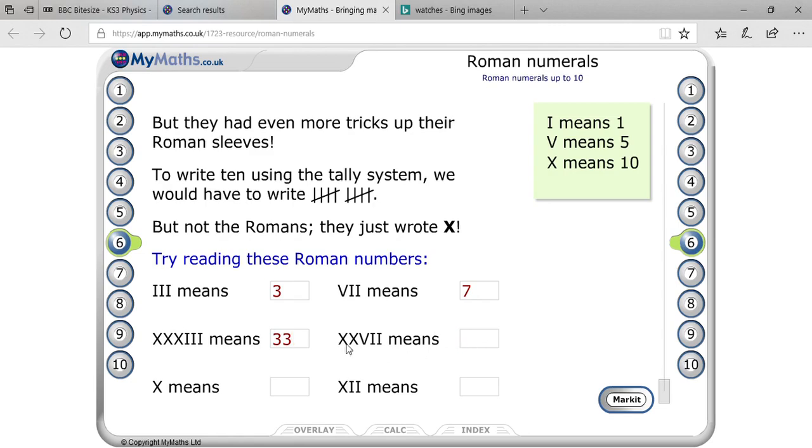Again, X, X, V, I, I. Can you tell me what this number will be? X, X... 27. 27, fantastic! That's great. 10, 20, V for 5 and I, I, 27.